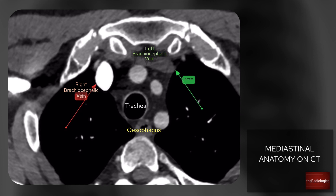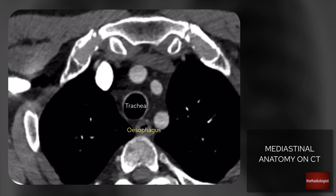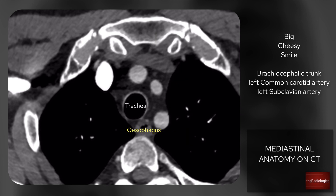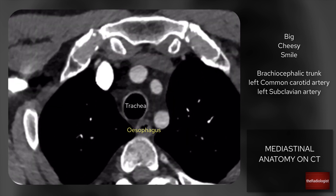There are another three vessels here as well — the three branches of the arch of the aorta. The mnemonic I use to remember these is 'big cheesy smile': B is the brachiocephalic trunk, C is the left common carotid artery, and S is the left subclavian artery. So you've got two veins at the front — right and left brachiocephalic veins — and then three arteries: brachiocephalic trunk, left common carotid artery, left subclavian artery.